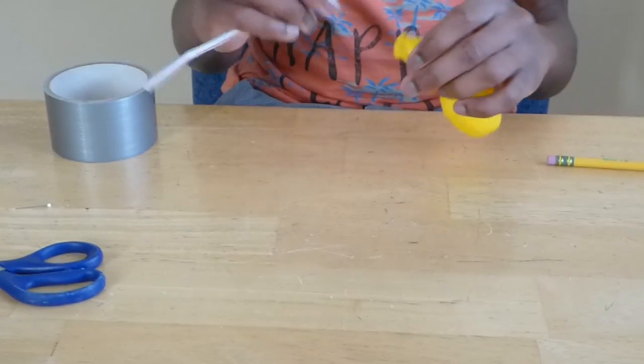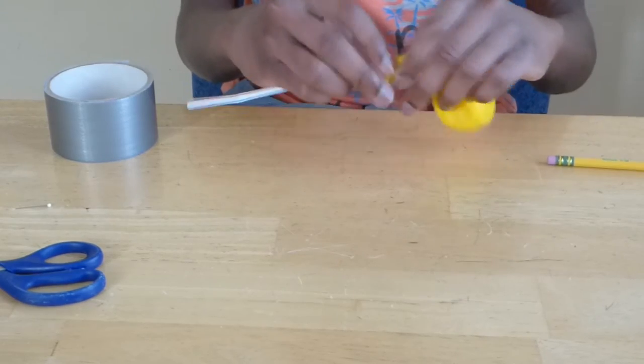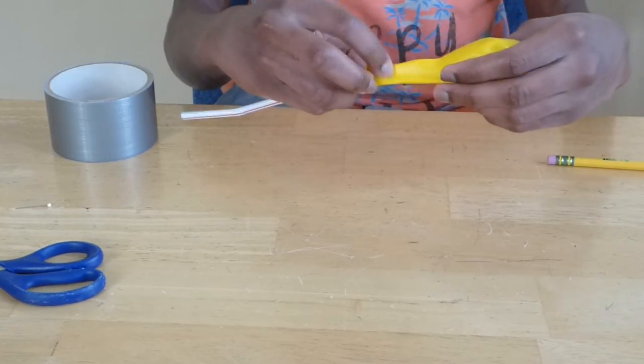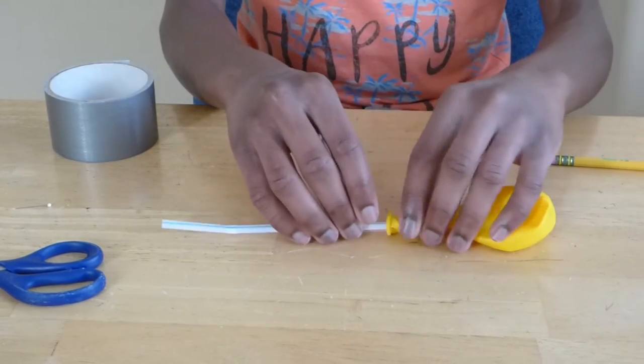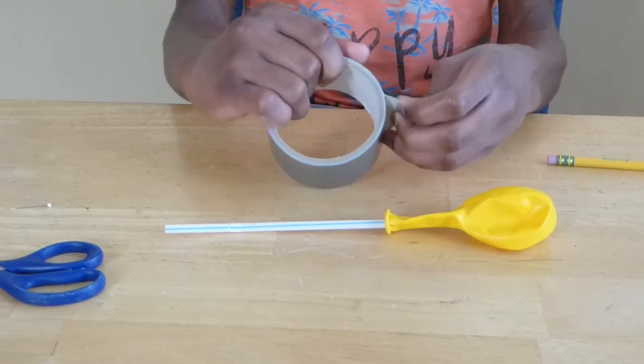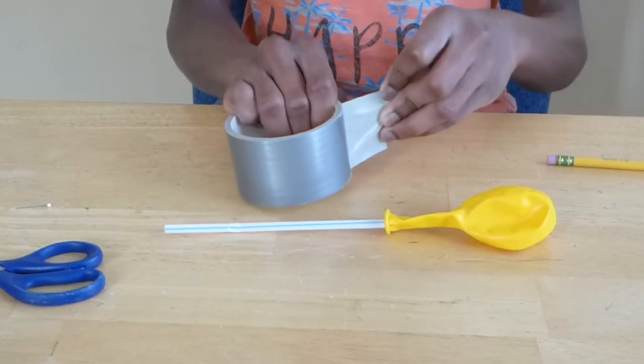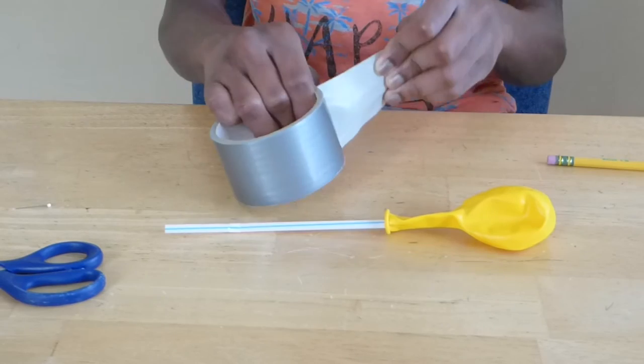First attach the balloon to the straw with duct tape. Make sure to create a tight seal. Use the scissors to cut the duct tape. If that doesn't work out then you can rip it.